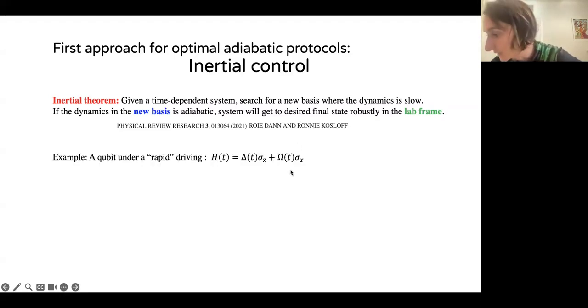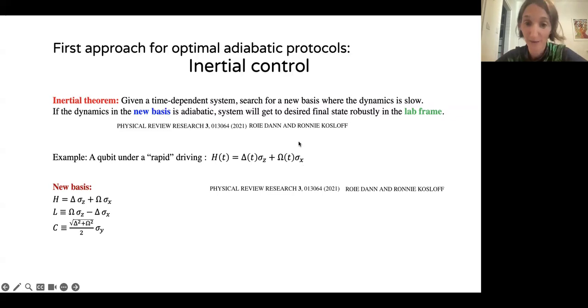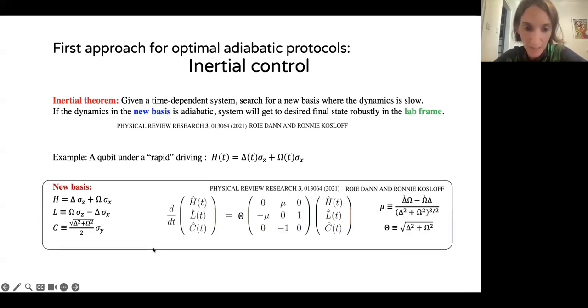It's a little abstract. So let me give a concrete example also from their paper. And that is, once again, our driven two-level system. But now delta and omega don't need to vary slowly. So here the Hamiltonian is written in this Pauli basis of operators, sigma x and sigma z. But we can introduce a new basis, which contains the operator h and two operators l and c, which are in some sense orthogonal to the Hamiltonian h. And we can write down the equations of motion for these operators using the Heisenberg equation of motion. And what you see is that we get this operator equation.